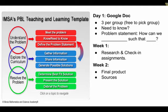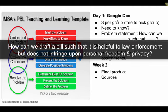The problem statement is going to be in the form of 'How can we blank such that blank.' You have to think about what you're trying to accomplish as a group and what the limitations or characteristics of your project are. For example, if the biotechnology is DNA fingerprinting, a helpful problem statement might be: 'How can we draft a bill such that it is useful to law enforcement but does not infringe upon the personal freedom and privacy of citizens?' You can see the goal is to create a bill for law enforcement with the stipulation that it can't violate privacy, and you can include several criteria in your problem statement.